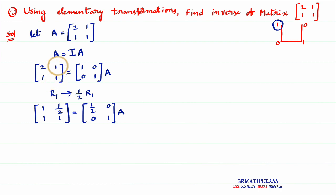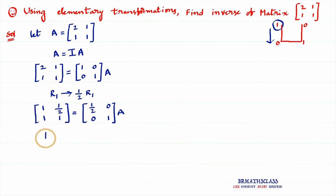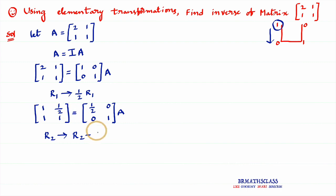My intention is to convert this into the identity matrix. I am making this element 1 — I got 1 here. Now, as per the U rule, I come to the element below. I want 0 there, and since 1 is present here, making this element 0 is very easy: 1 minus 1 equals 0. This element is in the second row, so R2 changes to R2 minus R1. Writing this operation takes a little practice but it's easy.